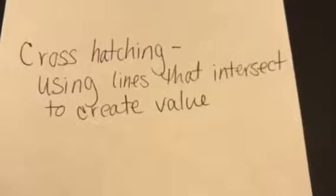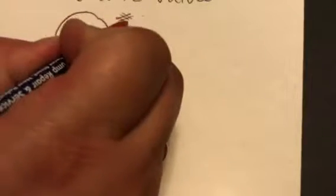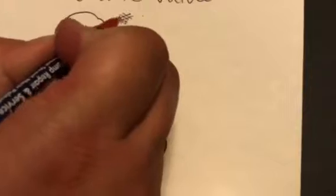Cross-hatching is using lines that intersect to create value. I'm going to use a spherical shape to illustrate this process. When I'm working on my spherical shape, I'm using lines that are parallel with each other and then criss-cross. To create darker values, those criss-crosses will become closer together. Letting the lines intersect. To create lighter values, they will become farther apart.